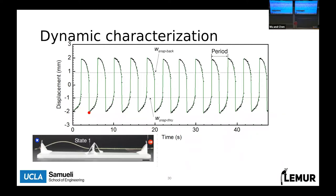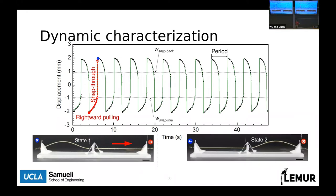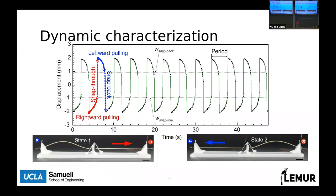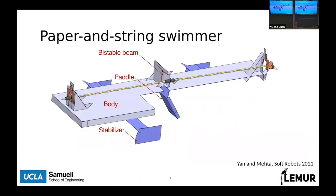It makes use of a bistable beam in the center which clicks over — it snaps through the bistable instability and now puts tension on the other actuator, which also has current going through it, giving it force in the other direction. It flips back and snaps back the other direction, giving you this oscillating behavior from constant power.